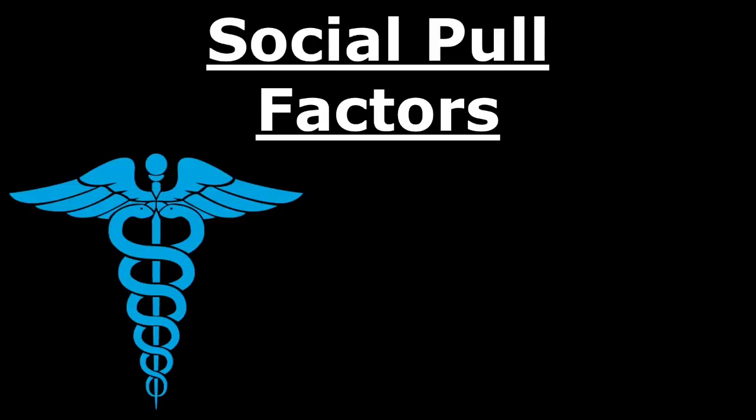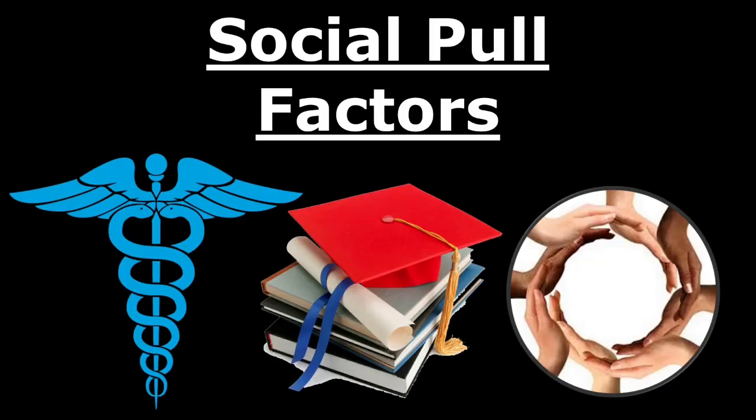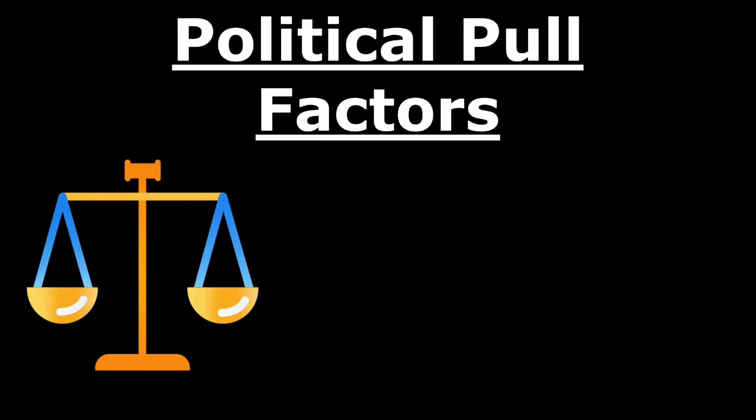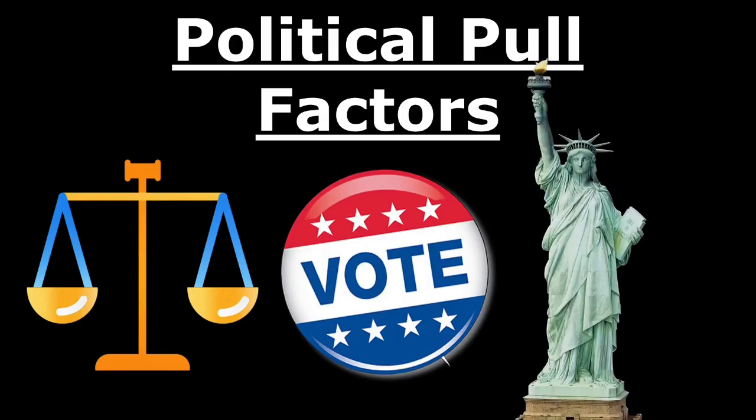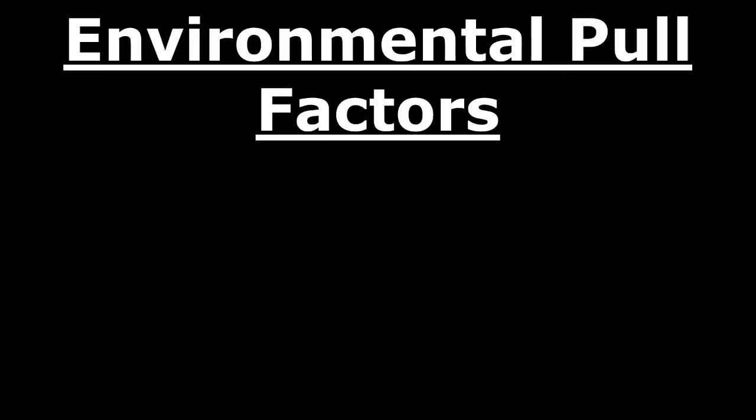Social pull factors could be stuff like access to healthcare, education, and equality. Political pull factors could be a judicial system that works, enforcement of laws, a good police system, the ability to safely vote for who you want to vote for, and of course freedom — freedom of religion, freedom of the press, all that kind of stuff.